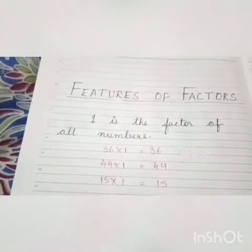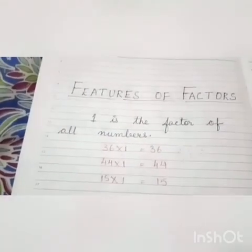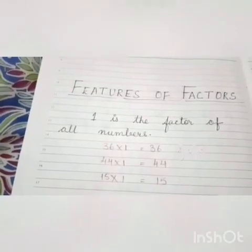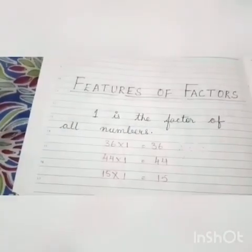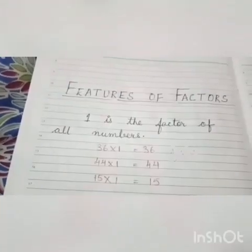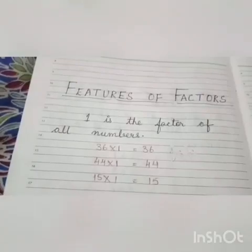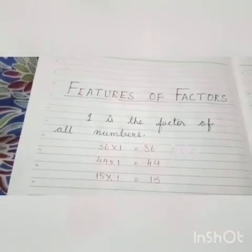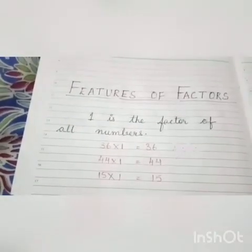So children, that means any number, big or small, it will have 1 as the factor. That means its 1 factor will be number 1. And children, 1 is the smallest factor of any number. All the numbers have 1 as the smallest factor.